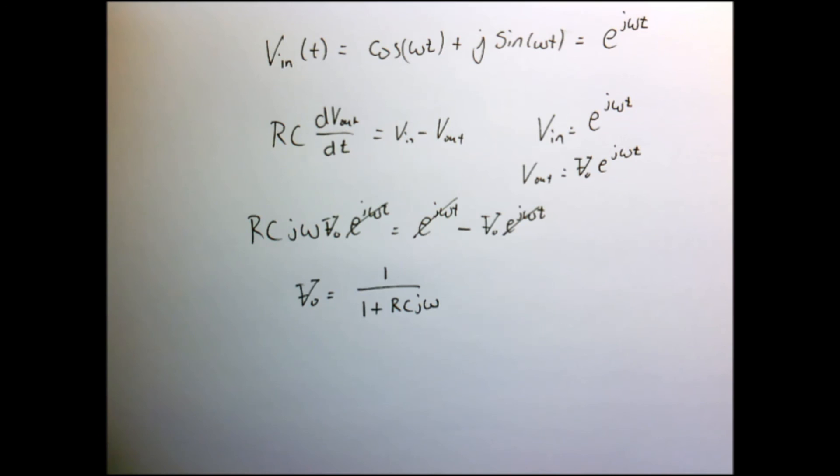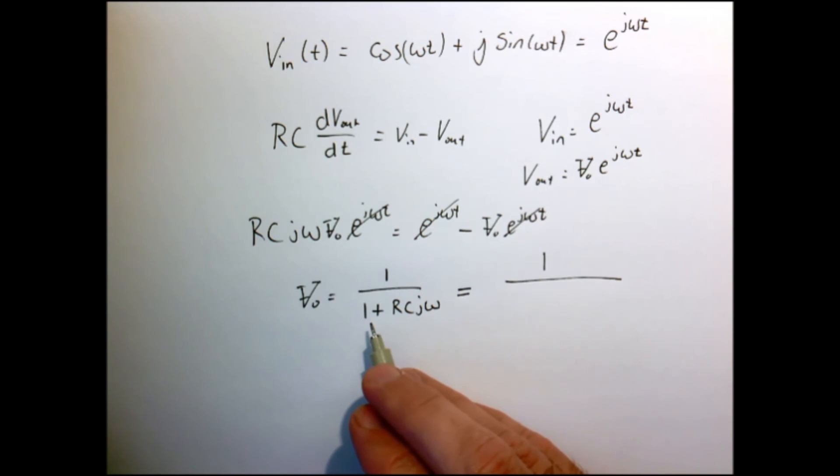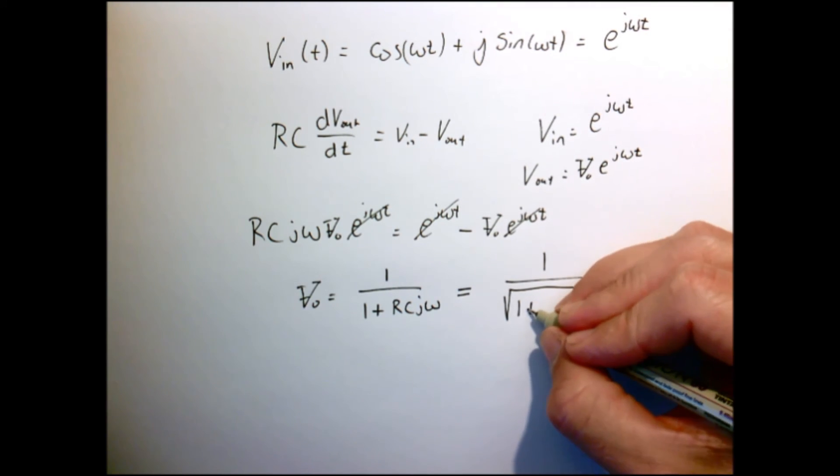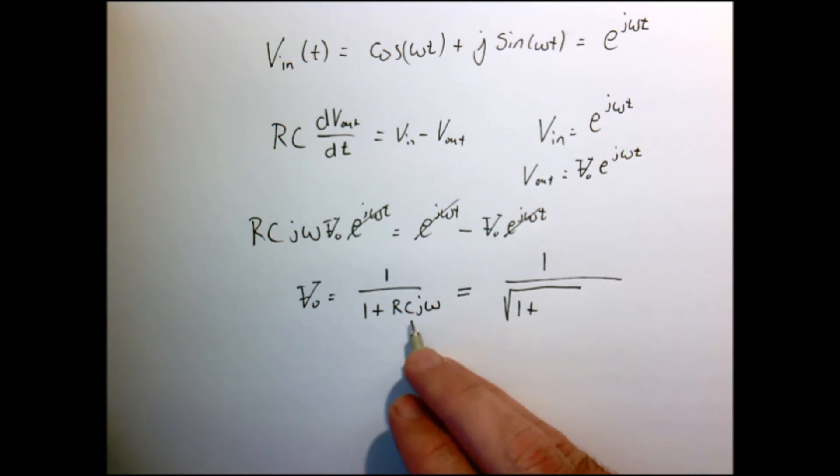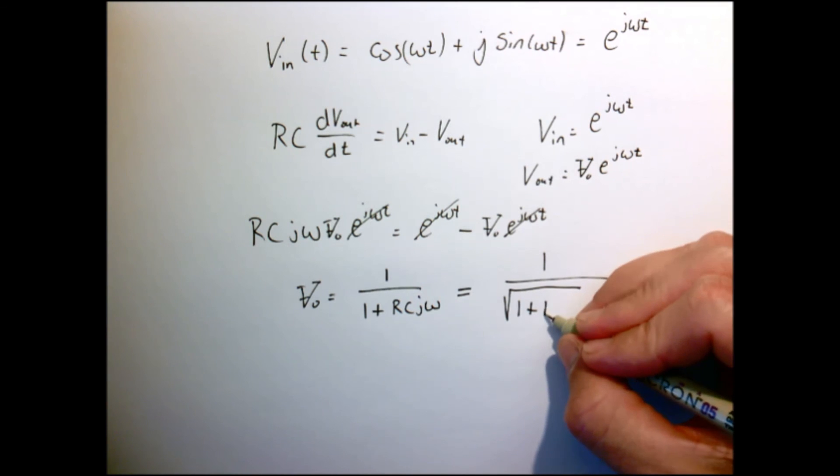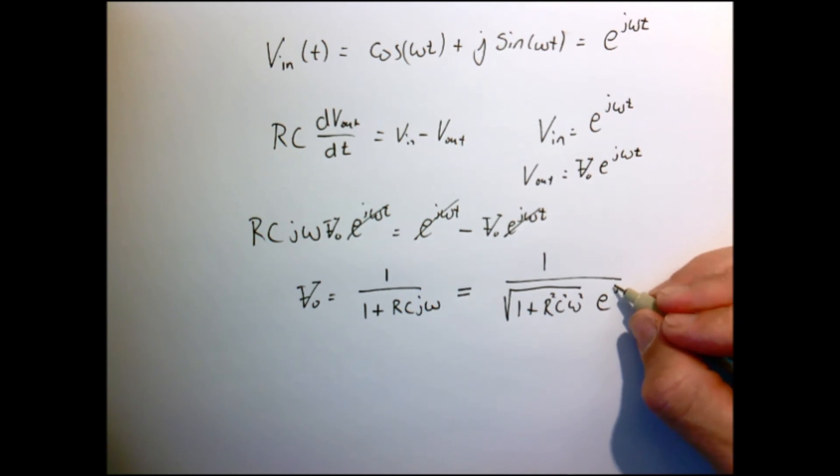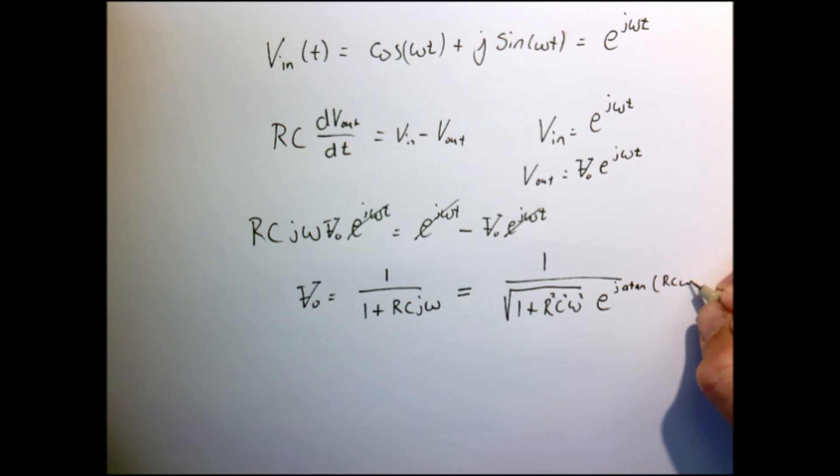Now we can write it in a more convenient form using our polar notation. So recall that I can write any complex number x plus y times j as being the magnitude of that complex number, which is nothing more than the square root of the real and the imaginary part squared, times e to the j angle, which is nothing more than the arc tangent of the imaginary part over the real part.